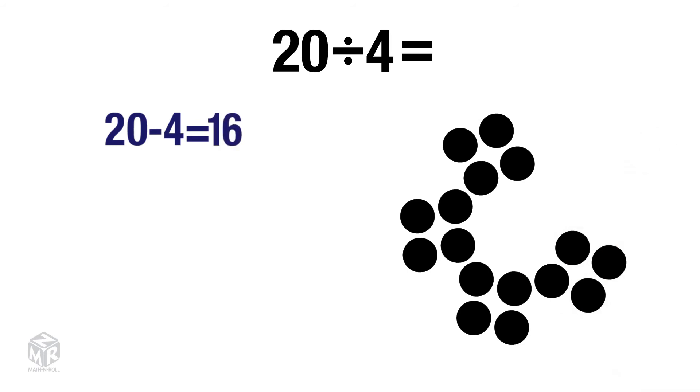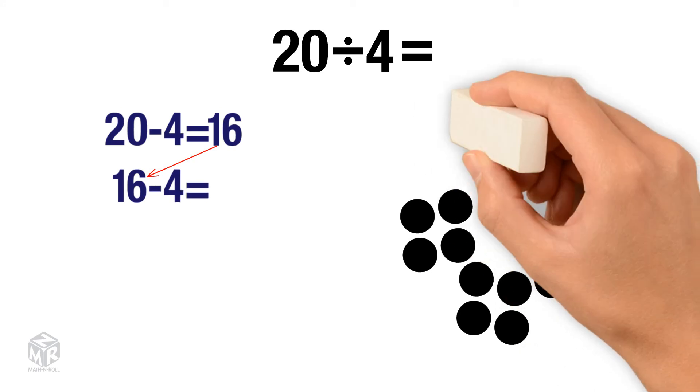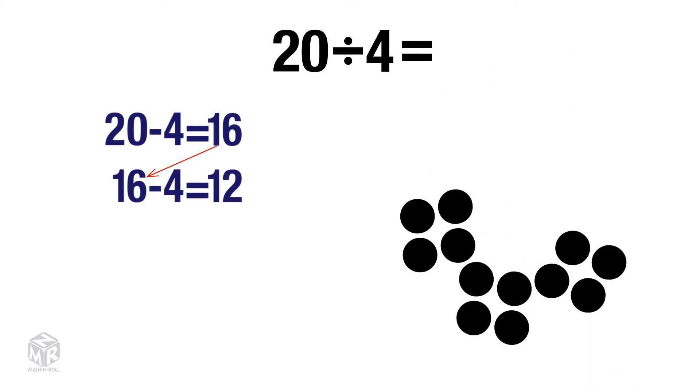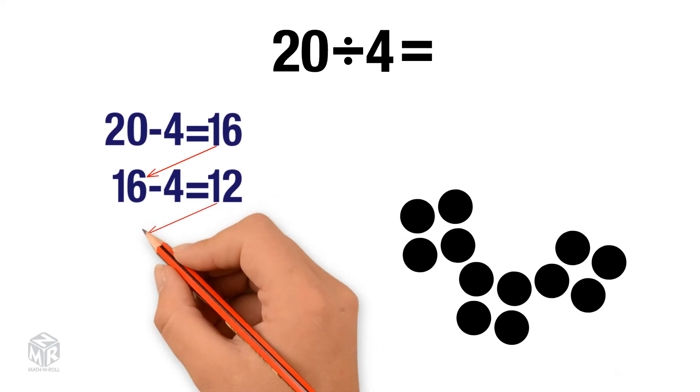There are more than 4 left, so we subtract 4 again. 16 minus 4 equals 12. We still have more than 4 left, so we subtract 4 again.